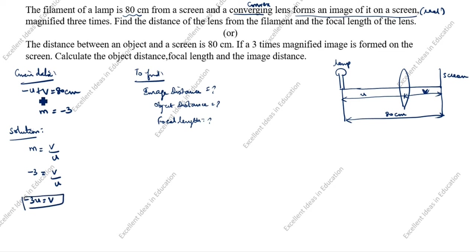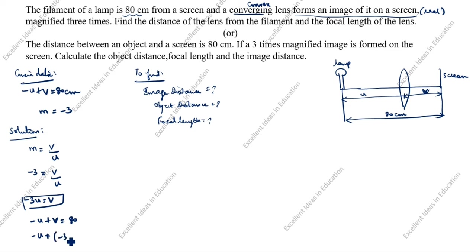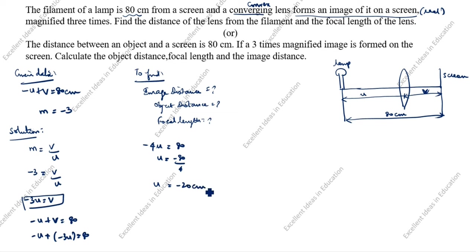We substitute V into the equation minus U plus V equals 80. So minus U plus (minus 3U) equals 80, giving minus 4U equals 80. Therefore U equals 80 divided by 4, so U equals minus 20 centimeters.